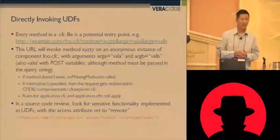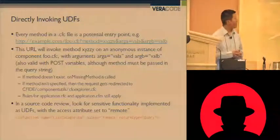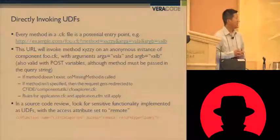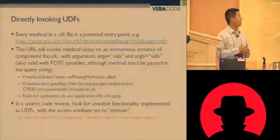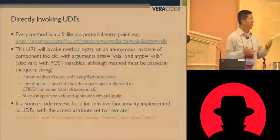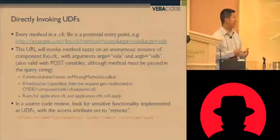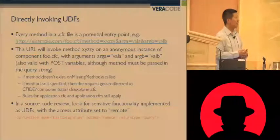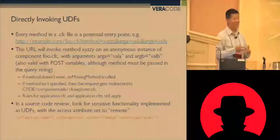Earlier we were talking about ColdFusion components and the idea that you can have functions accessible remotely. So foo.cfc is a ColdFusion component on the server, and basically any method in that CFC file is a potential entry point if it's defined the right way. The example URL loads a method called XYZ in foo.cfc and passes it two arguments — it's all done on the query string. You can also pass arguments in the POST body, but the method name has to be in the GET.